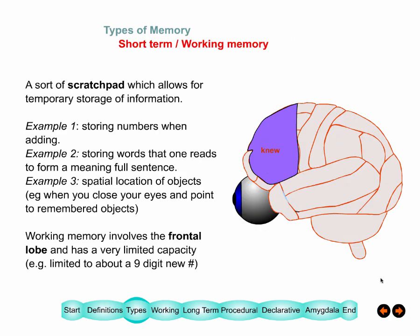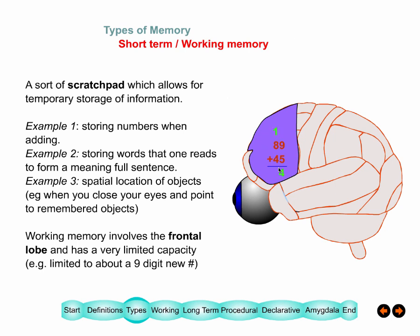In terms of types of memory, we covered working memory as one important type. Working memory can be of different types — it can store numbers when you do math, or the words of a sentence when you're trying to speak or understand what you've heard. Most of that occurs in the frontal lobe.